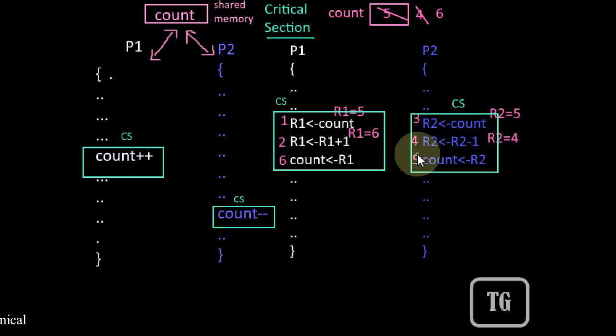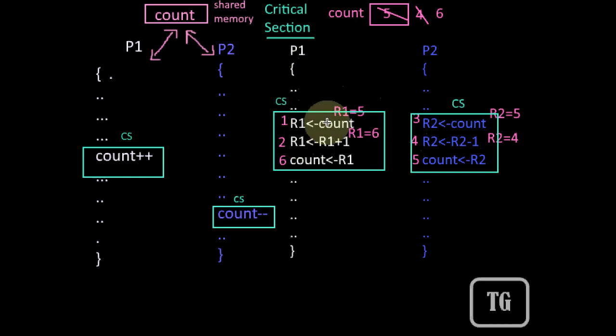To avoid the problem of race condition, if we have a set of processes P0, P1, etc. to Pn which share something, then if any process Pi is in its critical section, then no other process in that set should be allowed to enter their critical section.